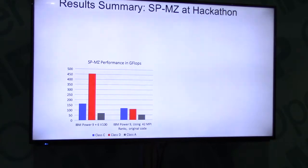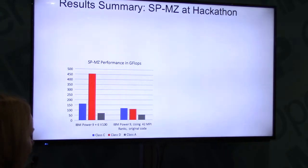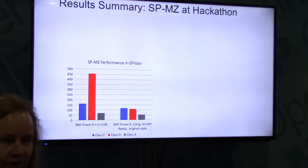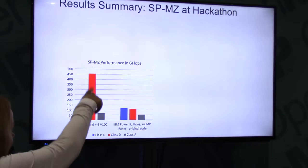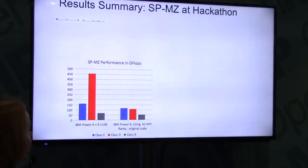Just to show you the results: higher is better. These are different class sizes — class D is the biggest benchmark we worked with, which is even small compared to real CFD codes. You can see the speedup we got on the GPU version after optimization.